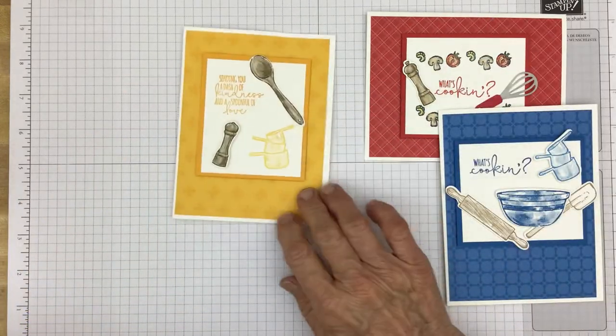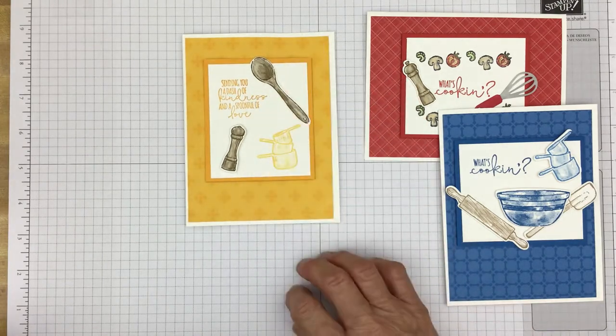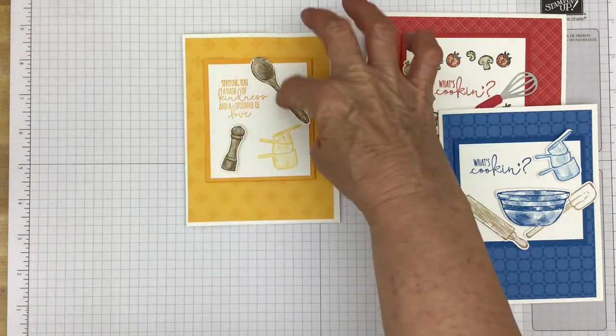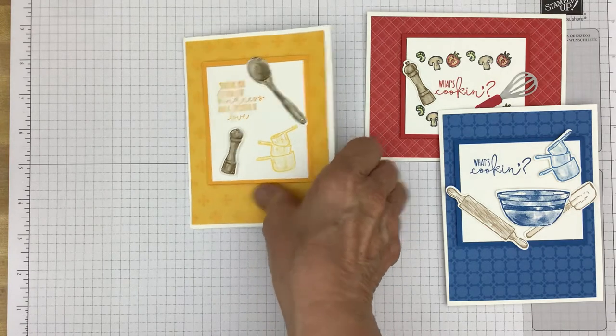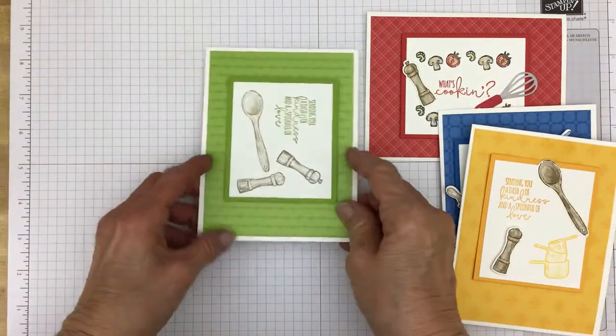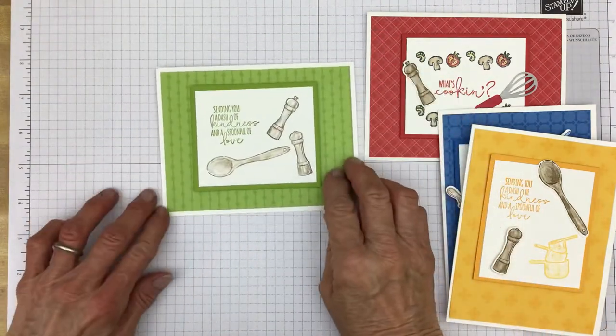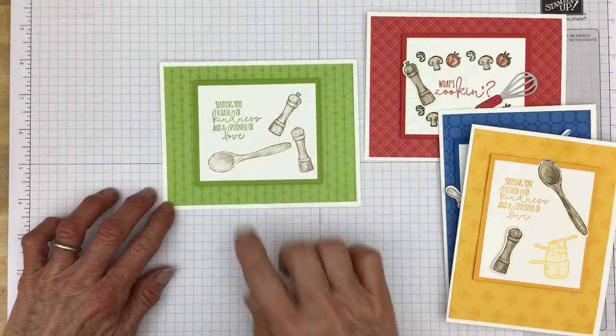And this one I just stamped the What's Cookin', stamped these on basic white and die cut them. And this one is a combination. I stamped my greeting. This is die cut and this is die cut while this is stamped.